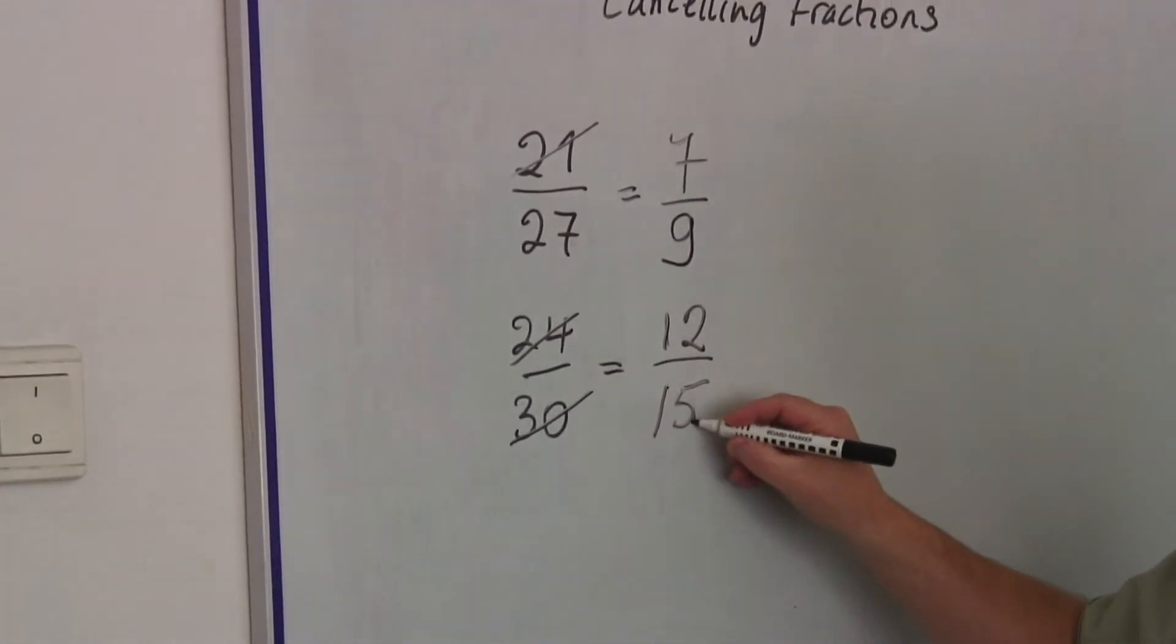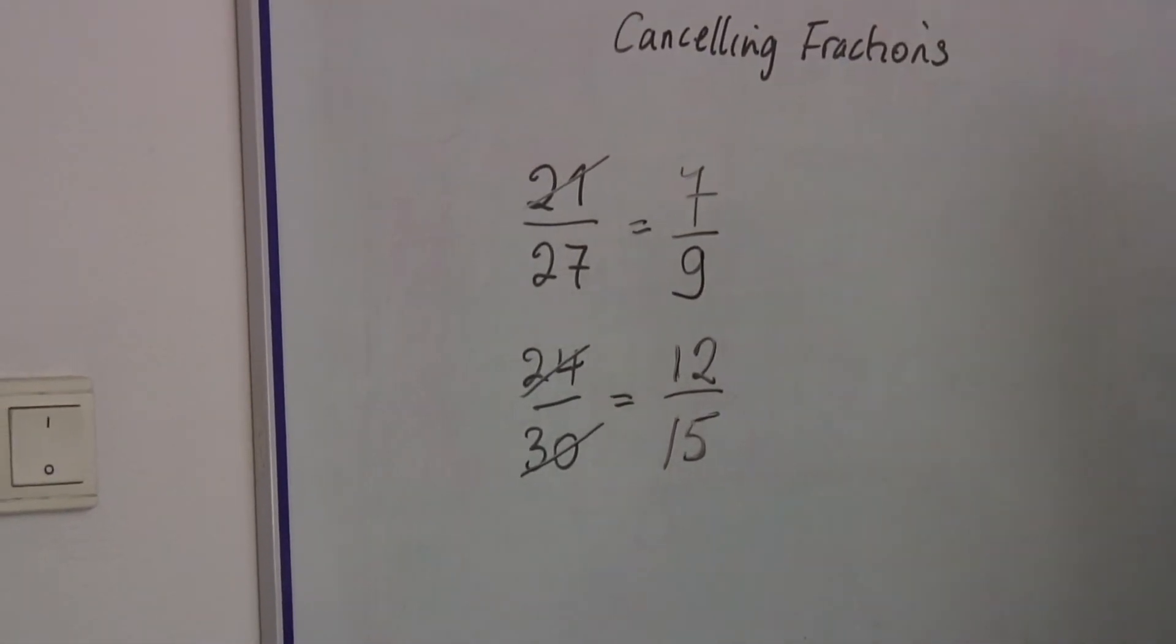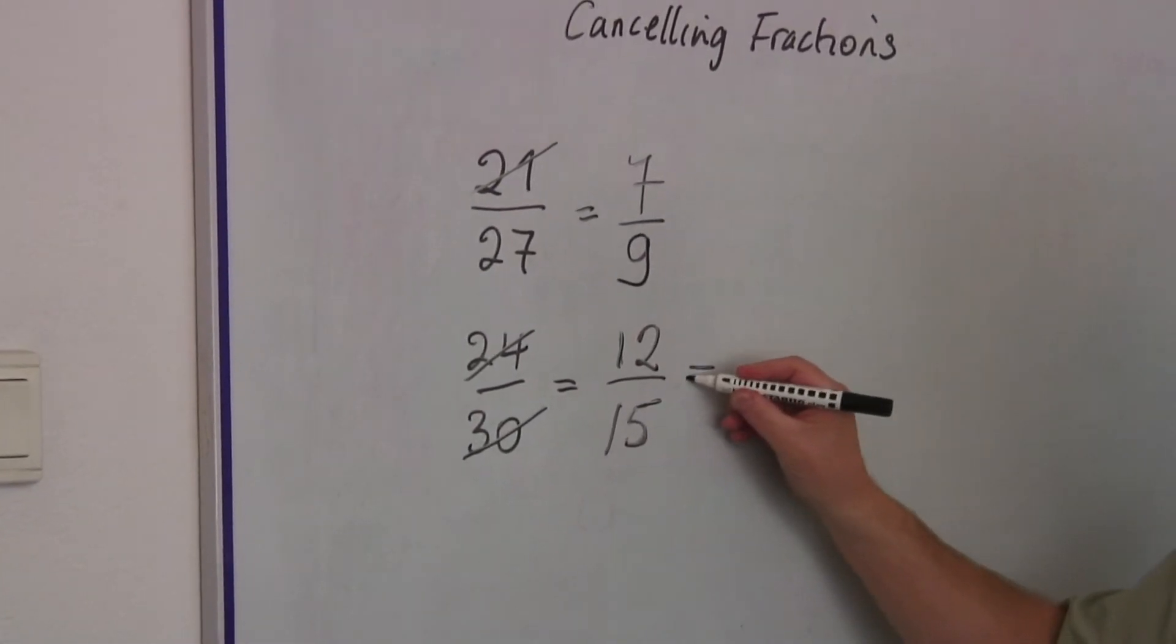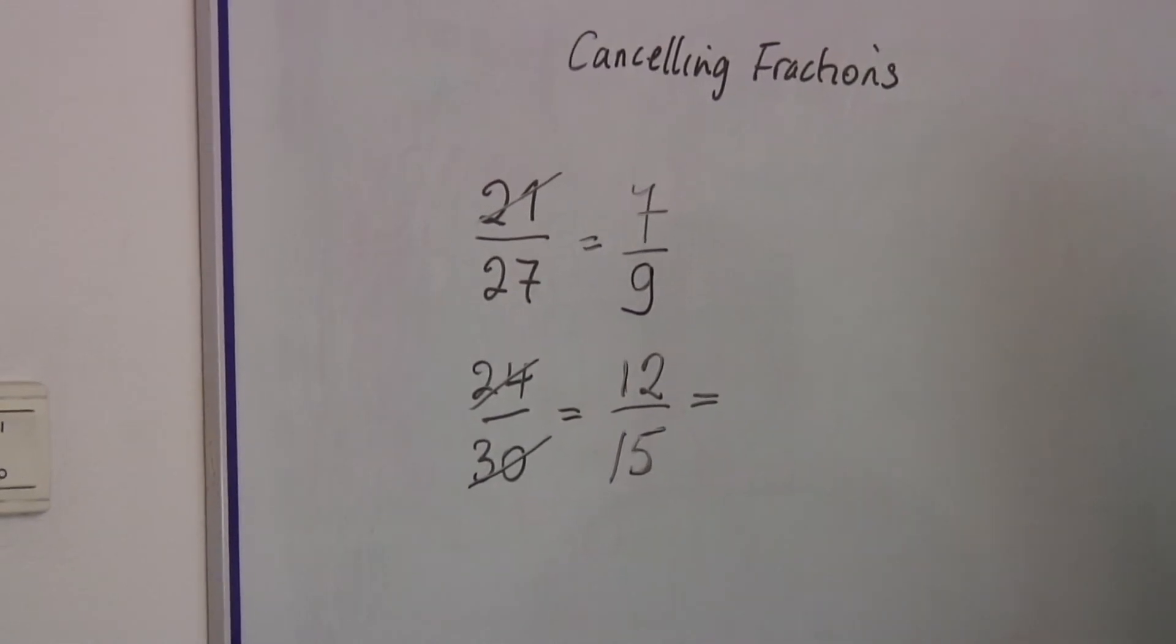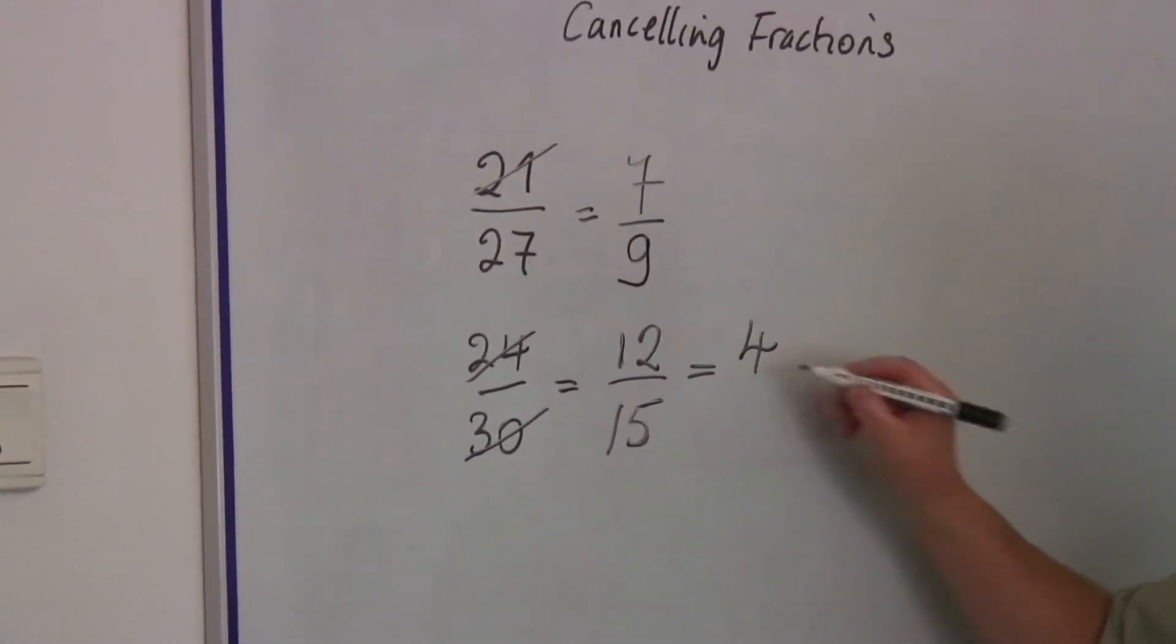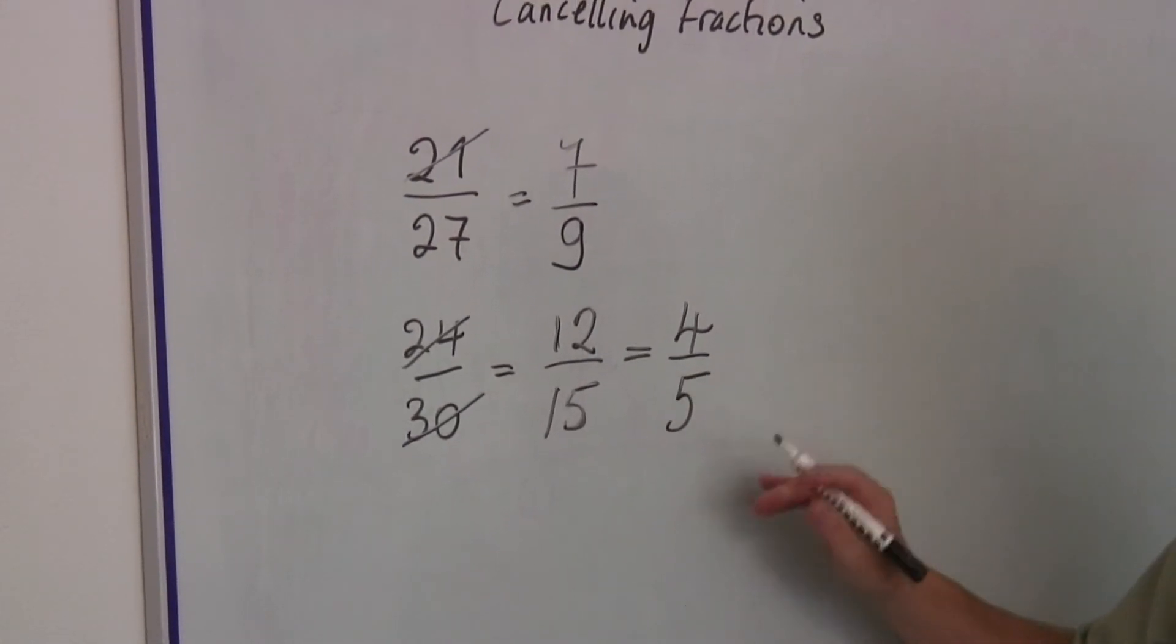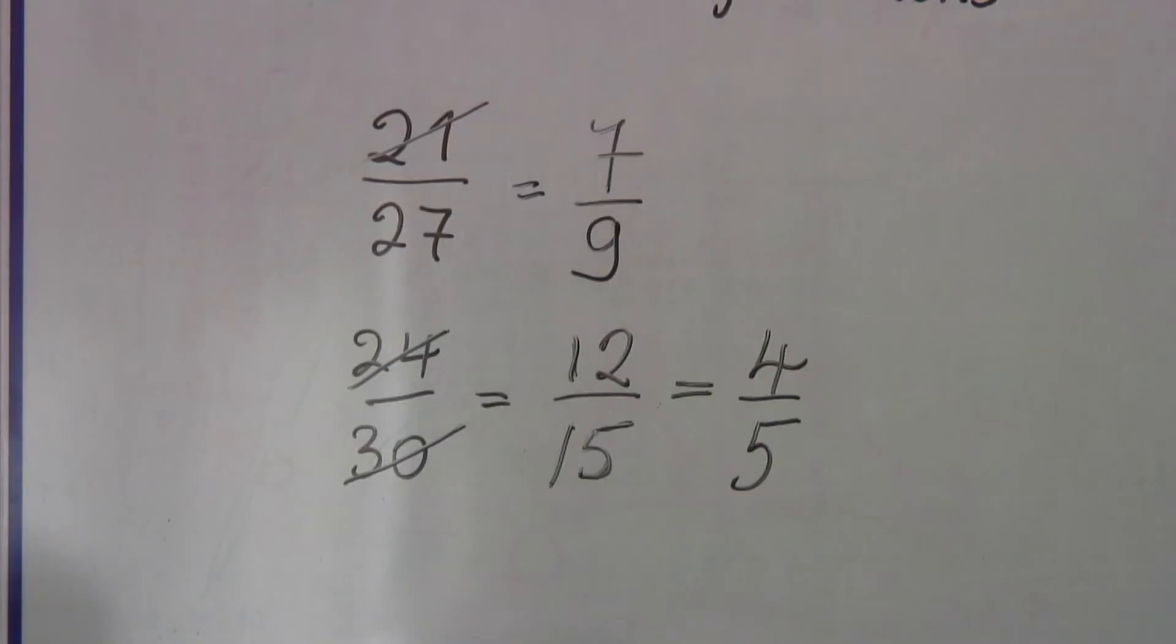But with twelve divided by fifteen, I know I haven't finished, because looking at them, both of those I know divide by three. Twelve divided by three is four. And fifteen divided by three is five. So my result is four-fifths.